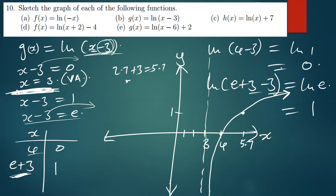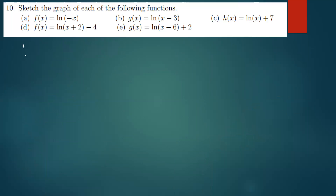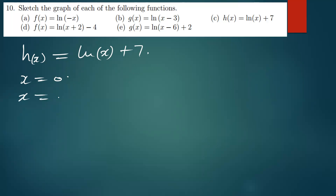The remaining questions are almost all the same. I'll solve parts c and d, and e will be an exercise — you can sketch it and send it to my WhatsApp. So h(x) = ln(x) + 7. The vertical asymptote: equate x to zero, giving x equals zero.